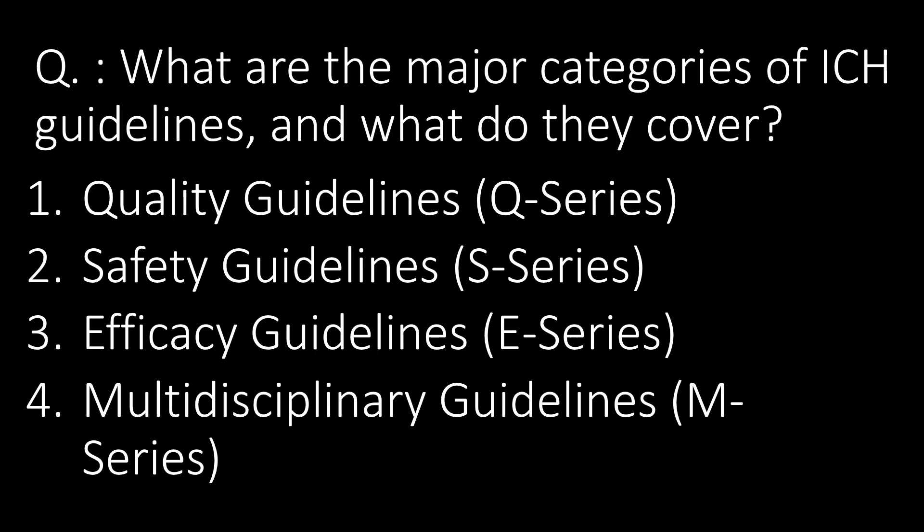What are the major categories of ICH guidelines and what do they cover? The first category is Quality guidelines, which come under the Q series. The second is Safety guidelines, under the S series. The third is Efficacy guidelines, under the E series. The fourth is Multidisciplinary guidelines, under the M series.